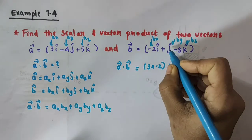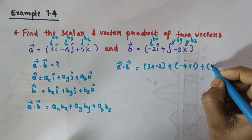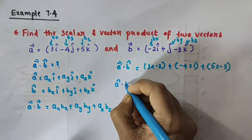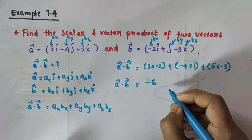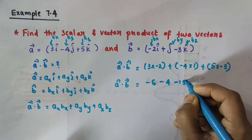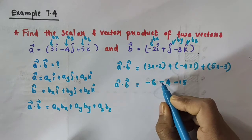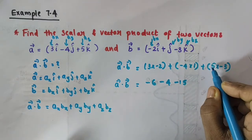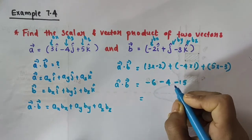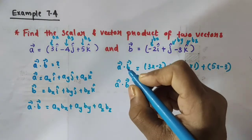Ay is minus 4 into By which is 1, plus Az·Bz which is 5 into minus 3. So this becomes: 3 times minus 2 equals minus 6, minus 4 times 1 equals minus 4, and 5 times minus 3 equals minus 15. That gives us minus 6 minus 4, which is minus 10, and minus 10 minus 15, which is minus 25. So vector A dot vector B equals minus 25.